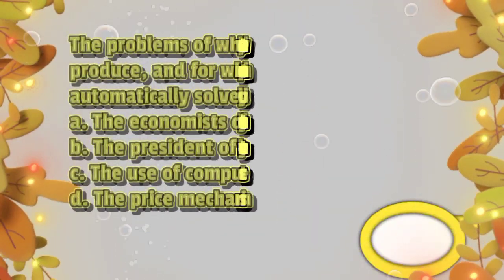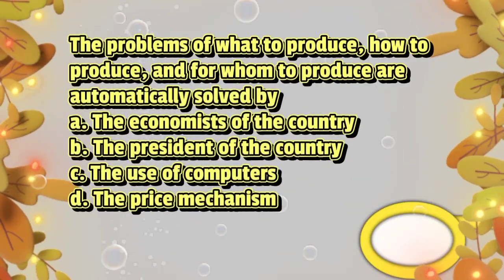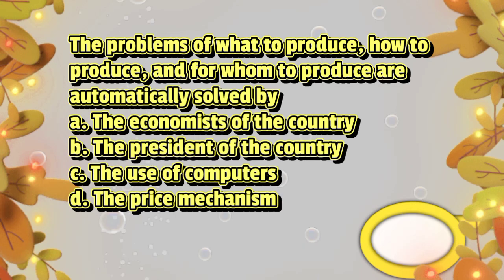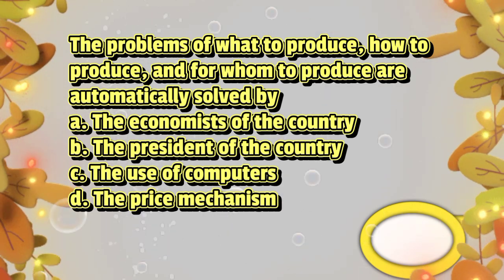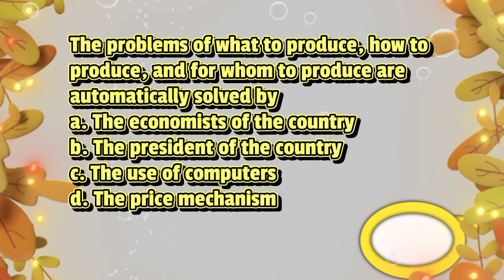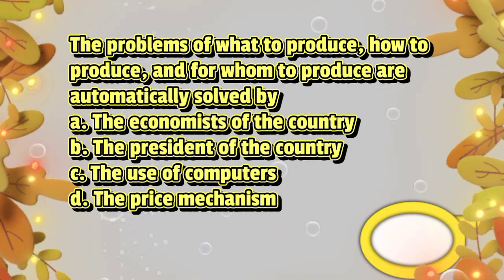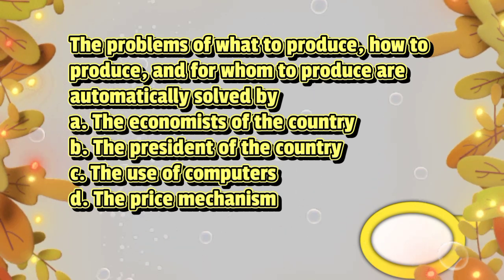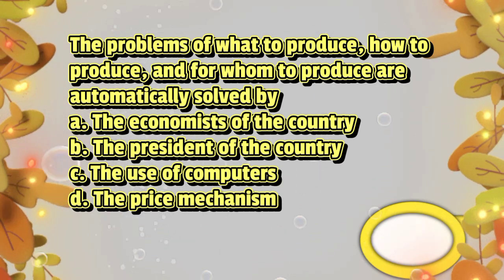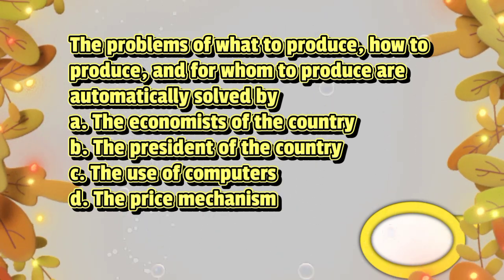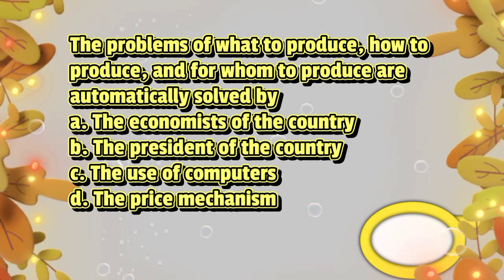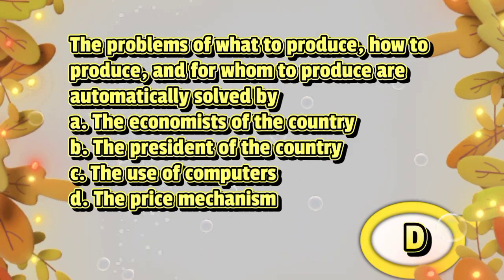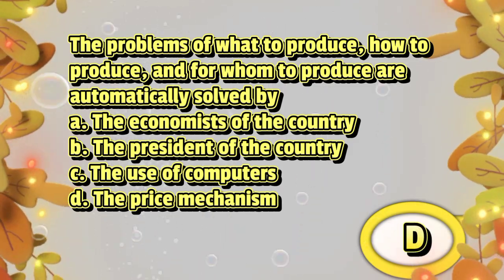The problems of what to produce, how to produce, and for whom to produce are automatically solved by. A. The economists of the country. B. The president of the country. C. The use of computers. D. The price mechanism. The answer is letter D.